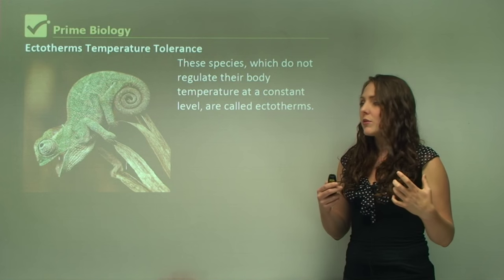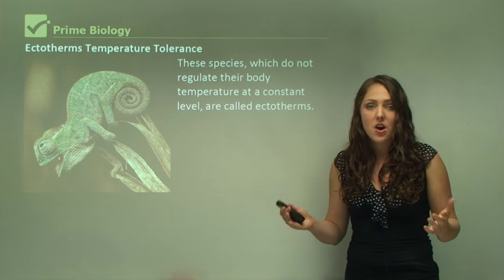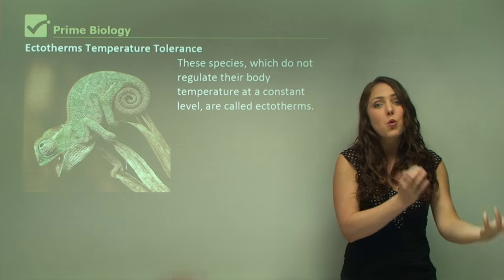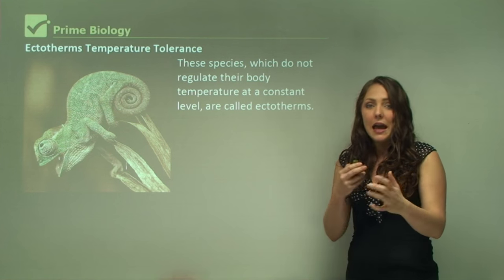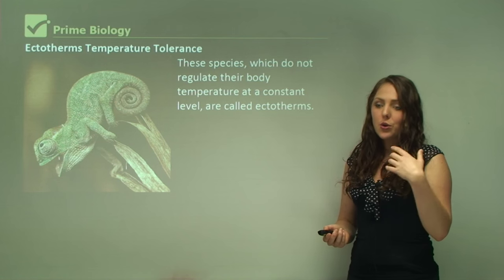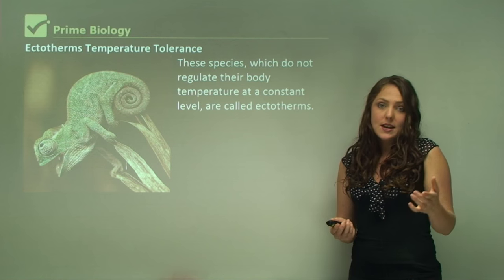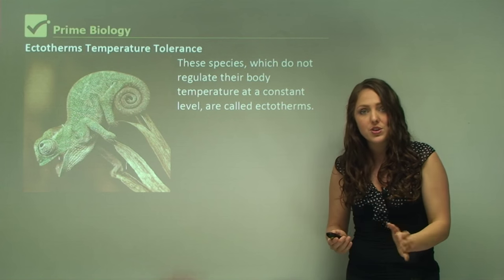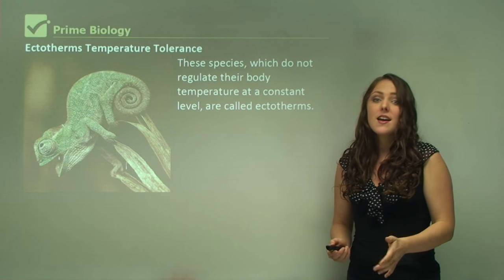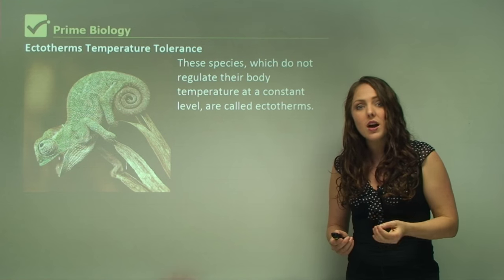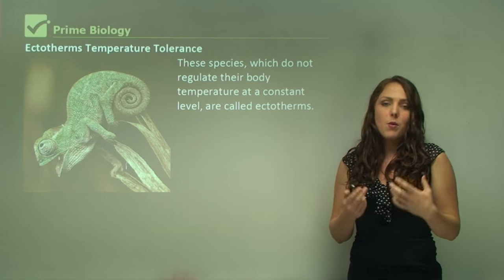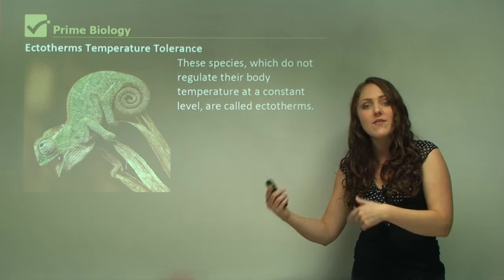Humans can go in many environments and the reason why we can do that is we have adapted things that either make us really warm in a cold environment or can cool us down in a really hot environment. For example, in Canada the temperature in winter can get as low as minus 70 degrees, and we would not be able to survive that with our normal skin — we need to rug up and put jackets on to survive that temperature.